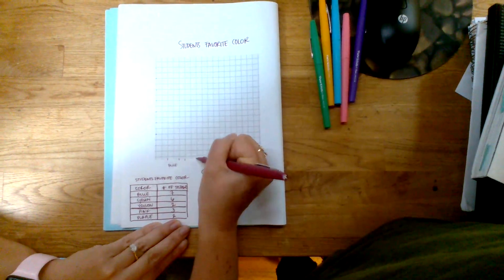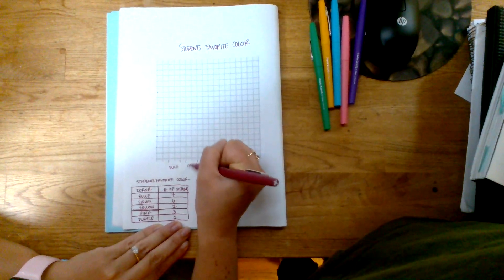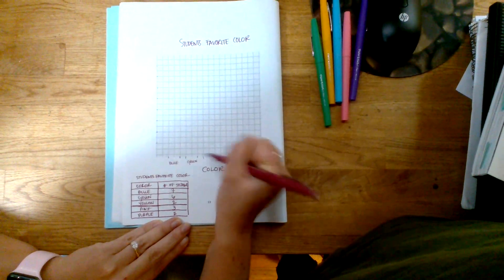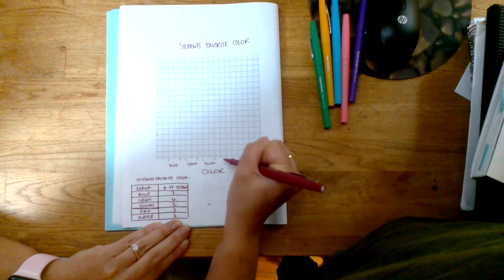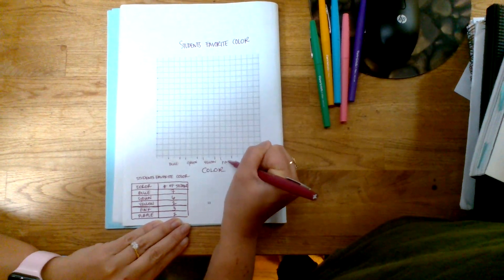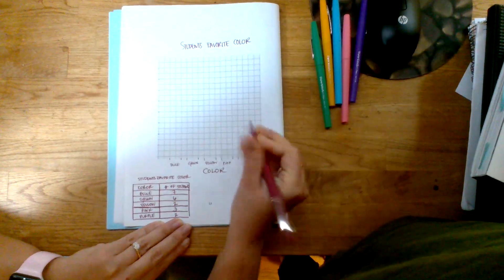I'm skipping a line in between. This will be yellow, pink, and purple.